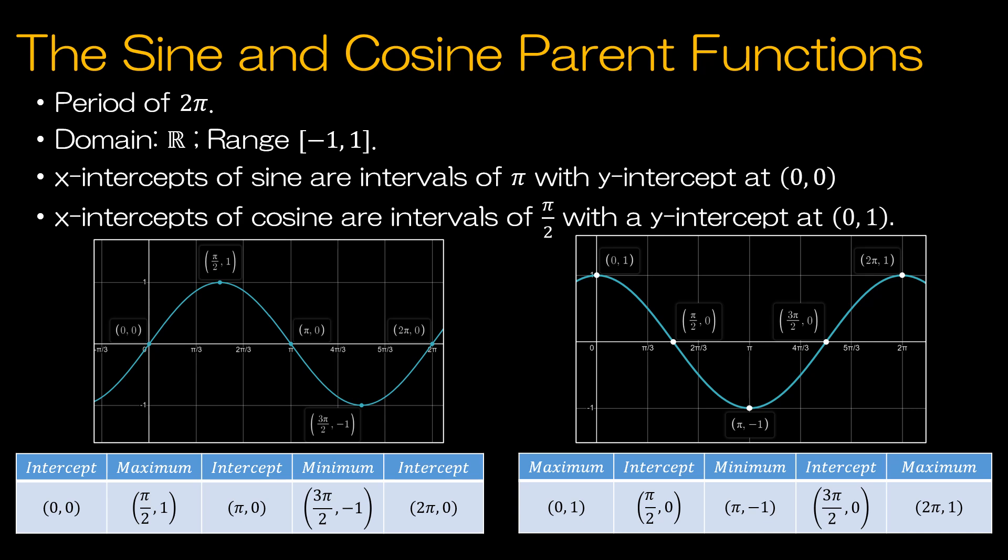We also know that the x-intercepts of sine, so this is y equals sine of x on the left-hand side of your screen, and the intercepts are at intervals of π. And again, that's for the parent function before we do any sort of translations or shrinking or stretching. We've got 0π, 1π, 2π, and so on to infinity.